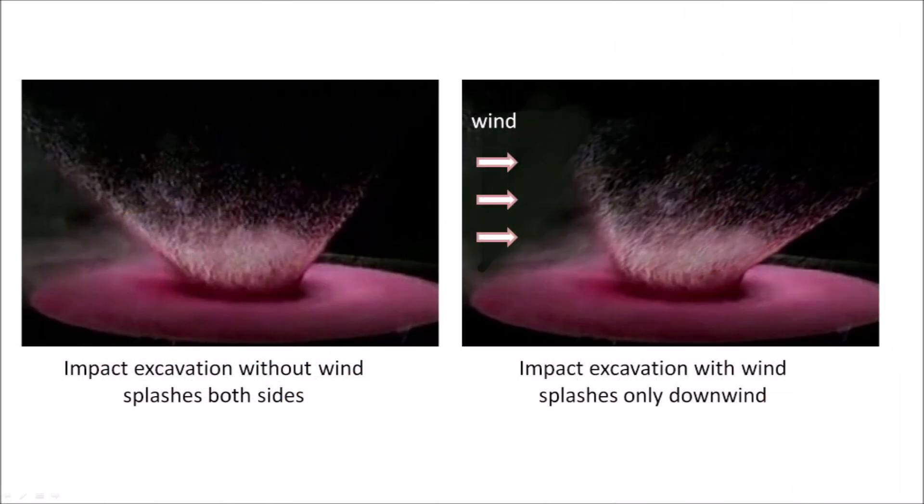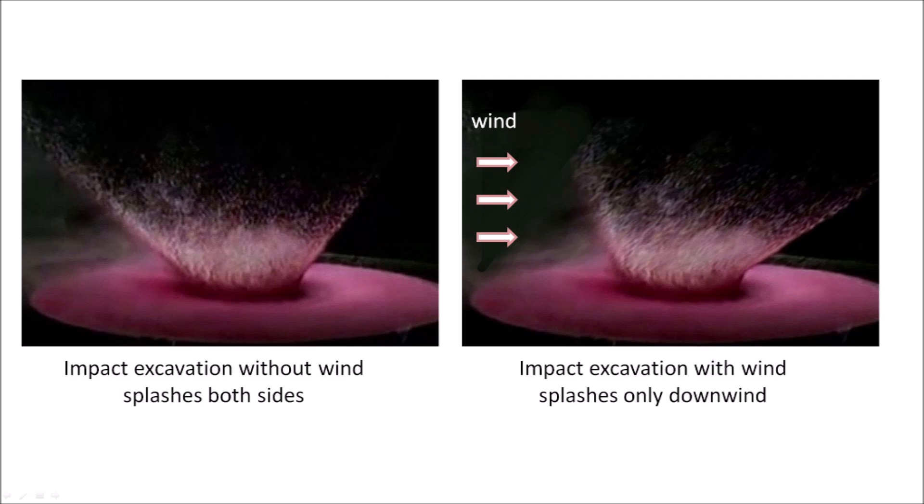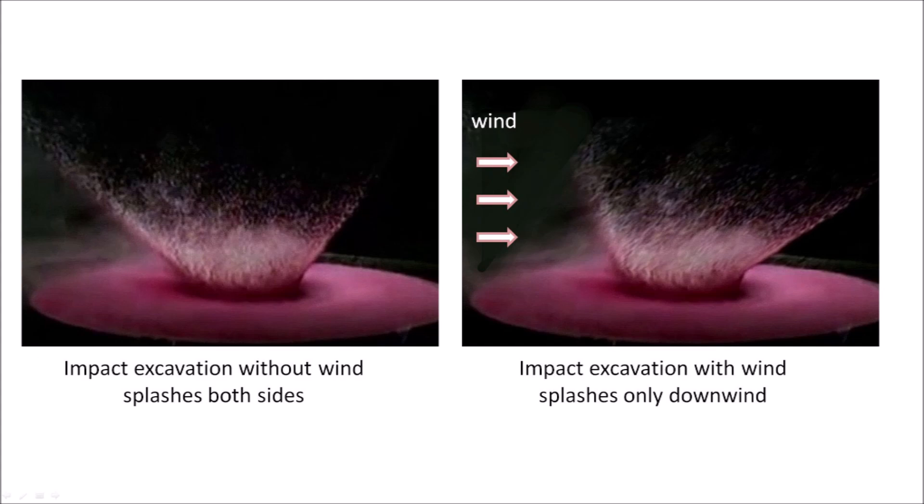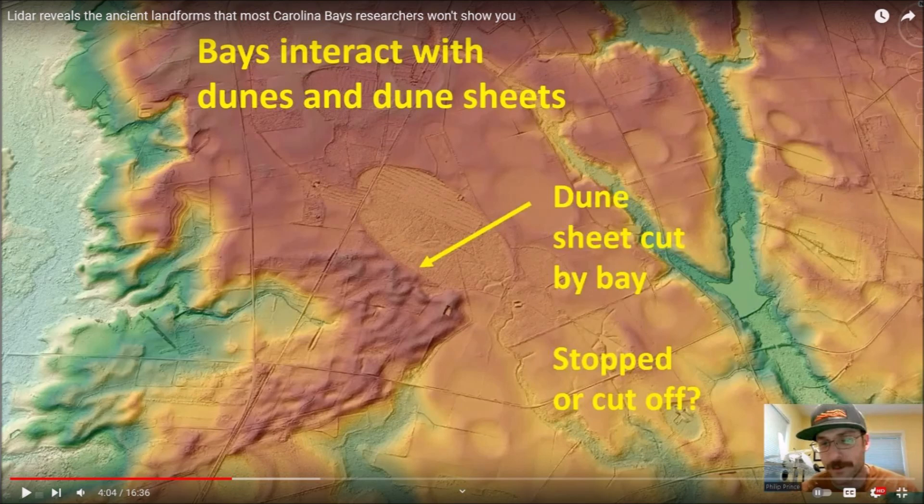The expectation that an impact would splash in opposite directions is correct if there is no wind. However, if the impacts that made the Carolina Bays were contemporaneous with the strong winds that made the sand sheets, then the ejecta from the impacts would have been blown only downwind. Philip looks in detail at the bays and the dunes or sand sheets and concludes that the bays interacted with the dunes.